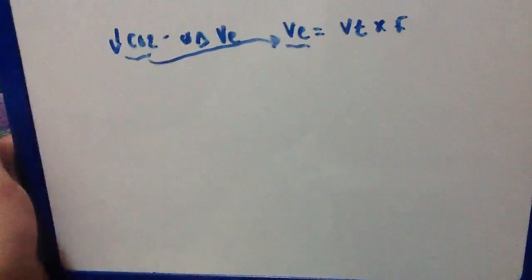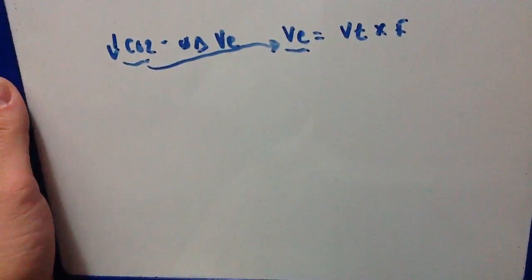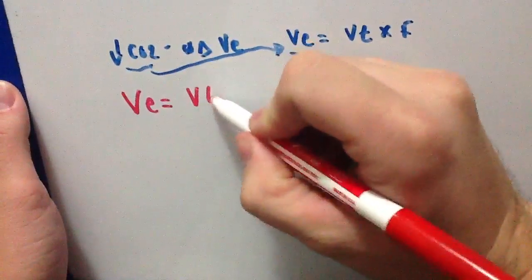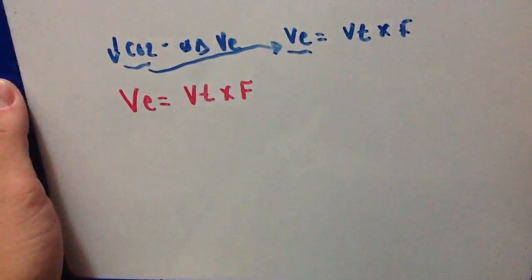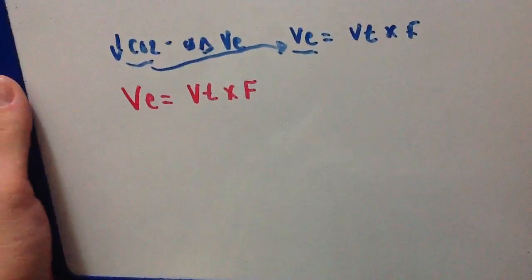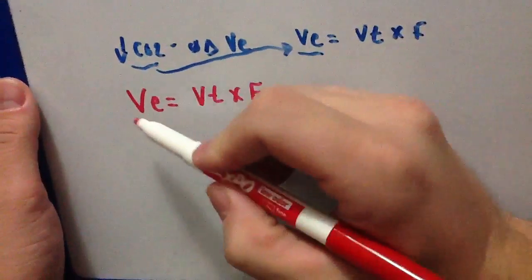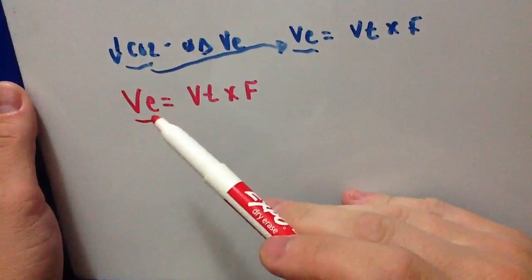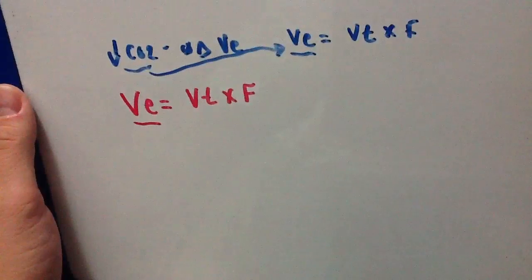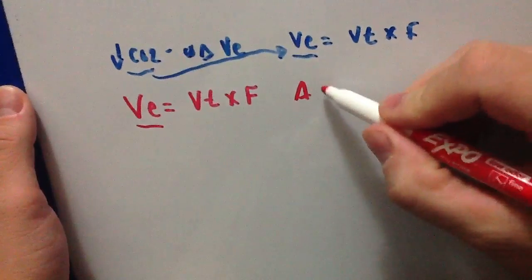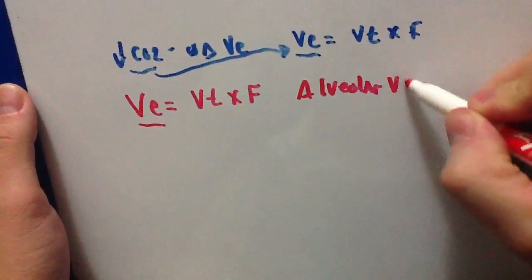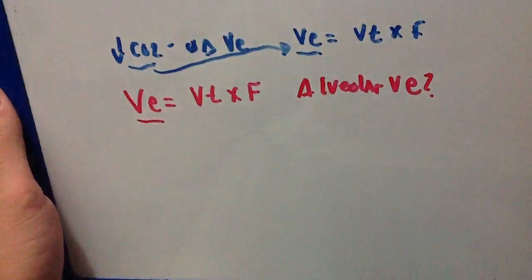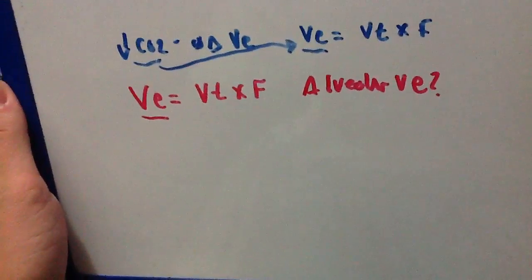When we look at minute ventilation, we need to realize that's not all there is to the story. VE equals VT times F, tidal volume times the frequency — that's not all there is to the story. Because when we look at minute ventilation, we need to ask ourselves: is that the amount of gas going in and out of the alveoli per minute? Is that what we call our alveolar minute ventilation? And clearly the answer is no, that is not alveolar minute ventilation.